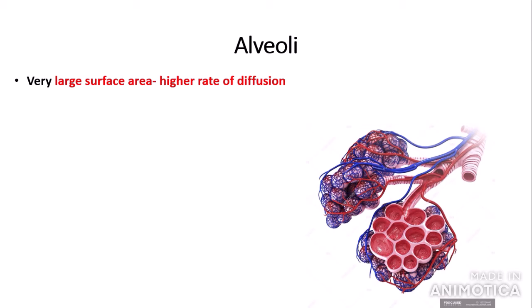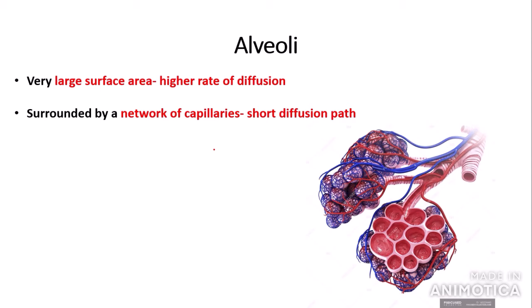Alveoli are the part of the lungs where oxygen is absorbed into the blood. Their main adaptation is a very high surface area — they are very folded — meaning there is a higher rate of oxygen diffusion into the blood, allowing efficient respiration. The alveoli are surrounded by a network of capillaries, providing a short diffusion path. The alveolar epithelium — the lining of the alveoli — is thin, decreasing the diffusion path. The capillary walls are also thin, further decreasing the diffusion path. Oxygen diffuses down a concentration gradient across the alveolar epithelium and the capillary endothelium into the blood.